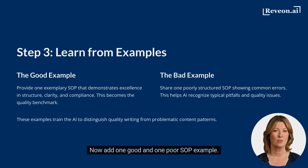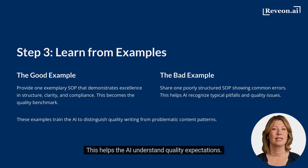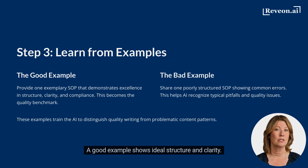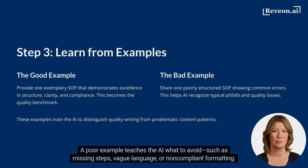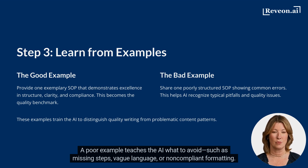Now add one good and one poor SOP example. This helps the AI understand quality expectations. A good example shows ideal structure and clarity. A poor example teaches the AI what to avoid, such as missing steps, vague language, or non-compliant formatting.